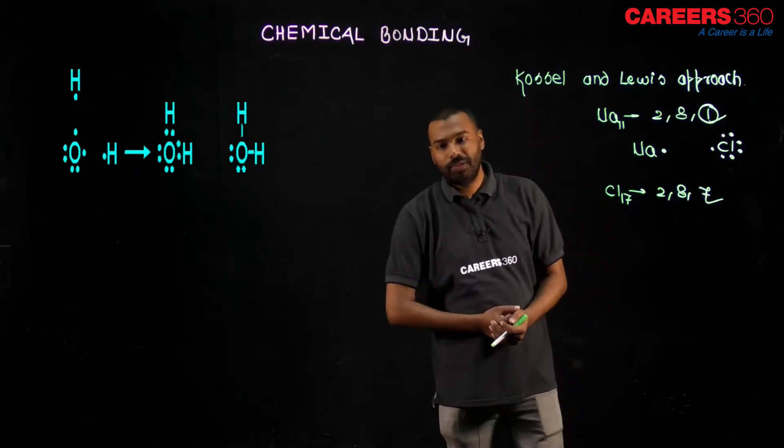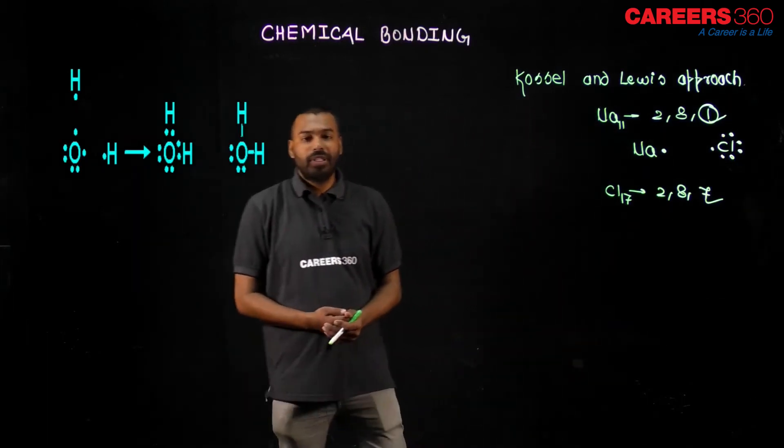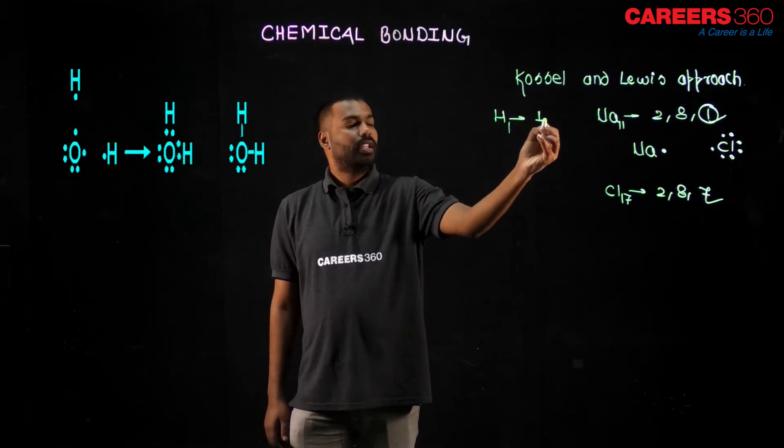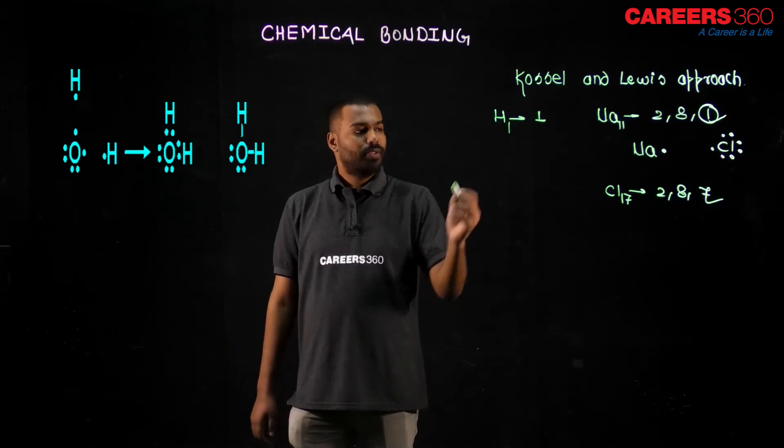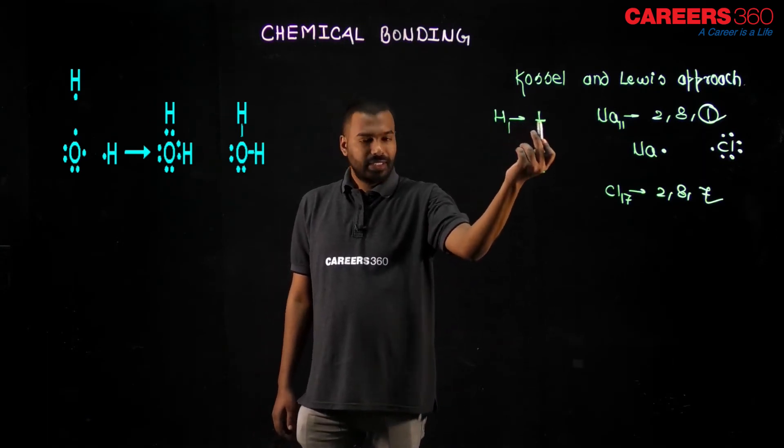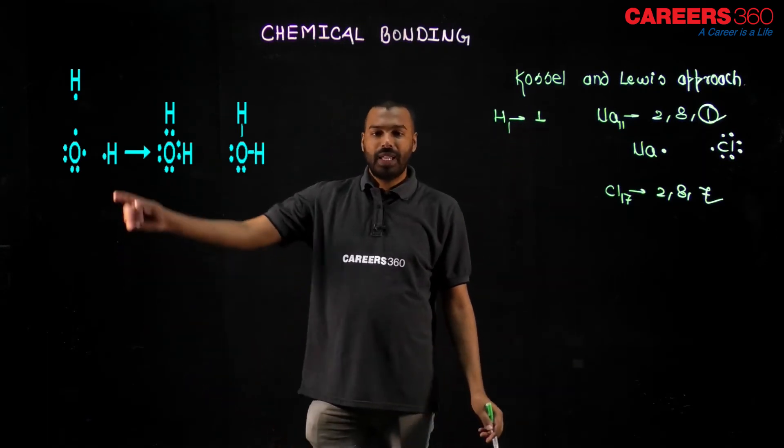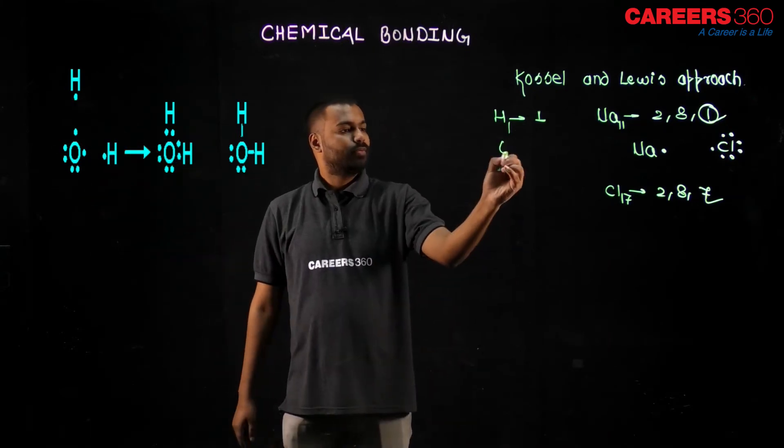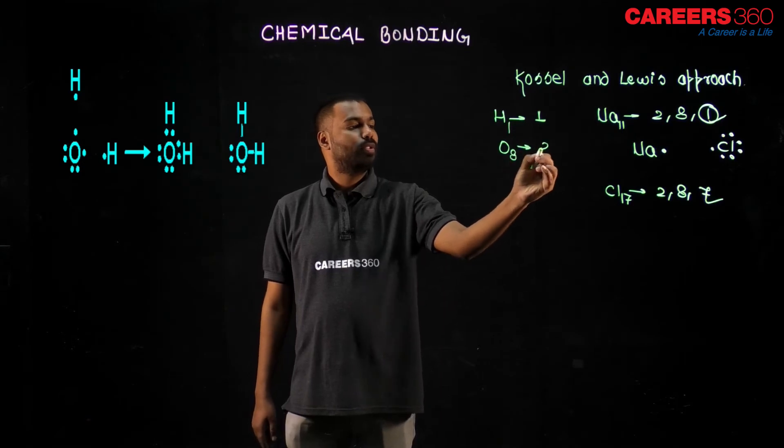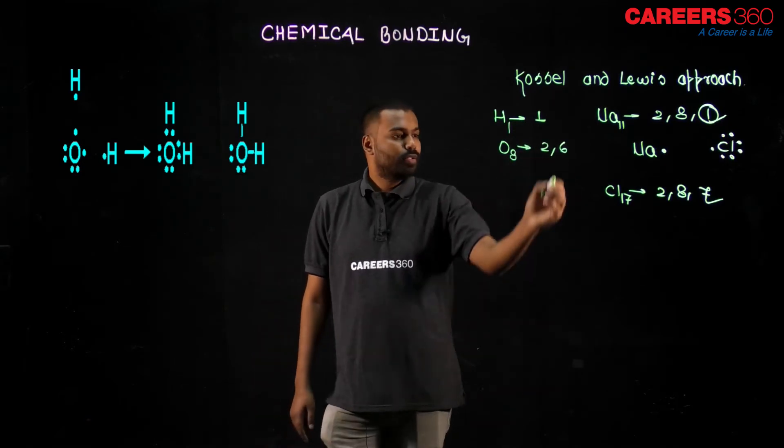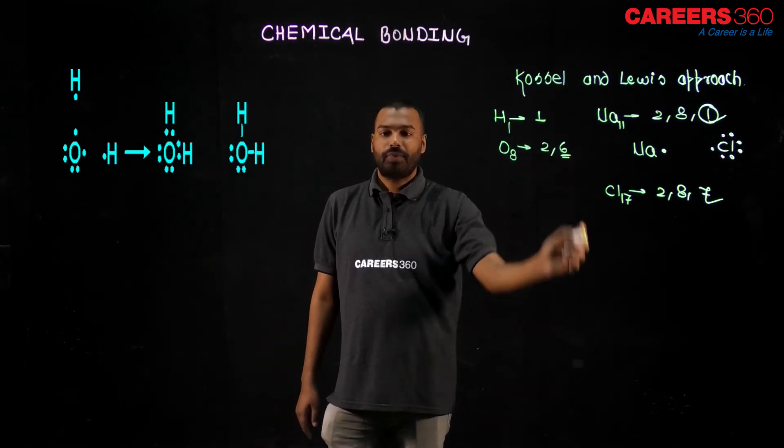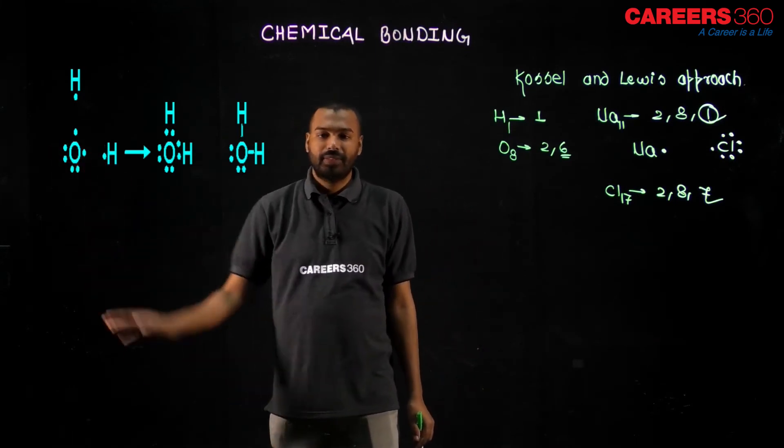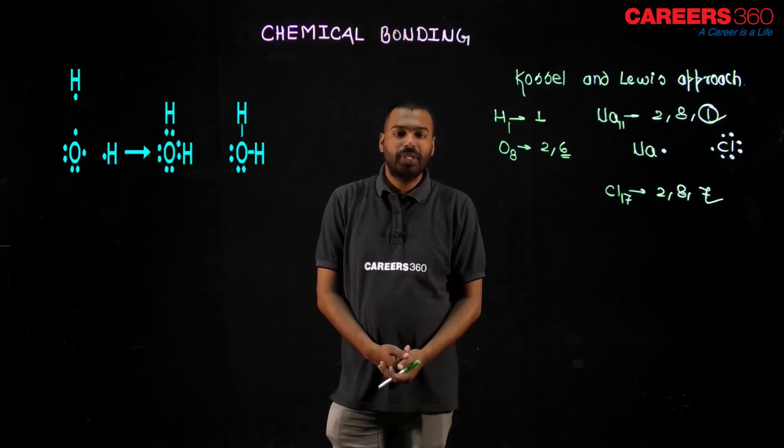This is water molecule, dear student. In water molecule, hydrogen has one atomic number, electronic configuration 1. So hydrogen has one valence shell electron. So hydrogen has one dot, you can see. Here is also one dot. Oxygen has 8 atomic number, so 2, 6. So 6 electrons is the valence electron. That is why oxygen has 6 dots around it: 2, 2, 4, 5, 6, correct. This is the Lewis dot.